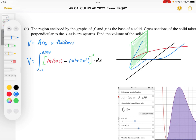We took the cross sectional area, which is that edge length squared, and we integrated it from negative 2 to 0.774.